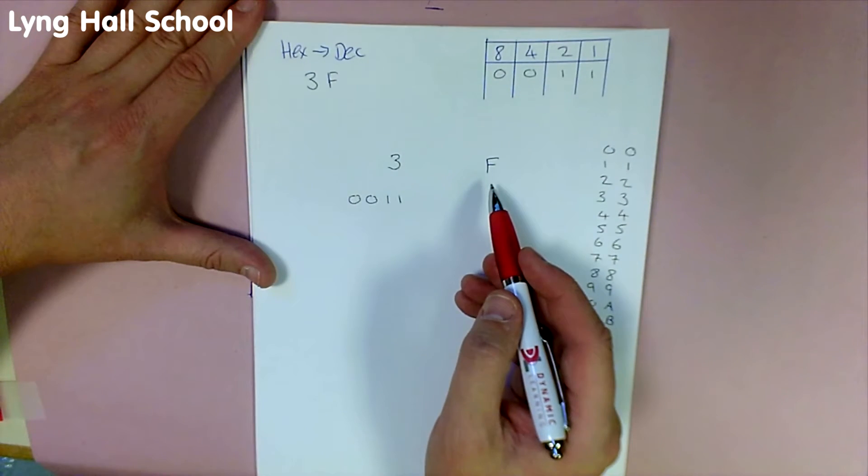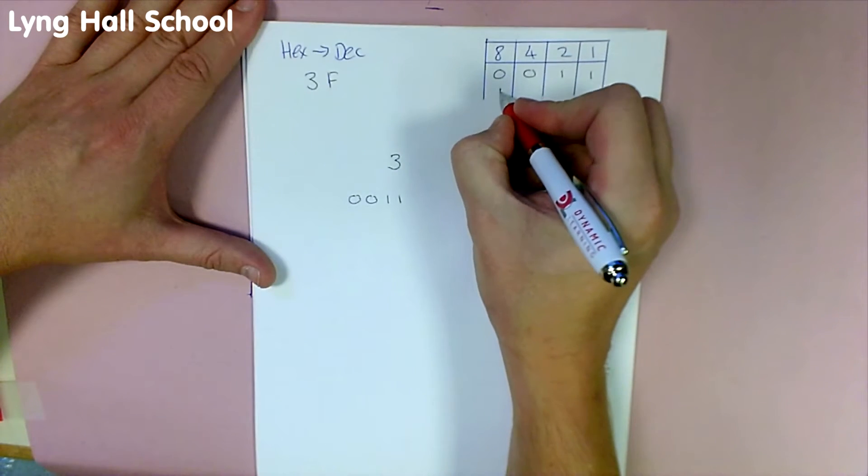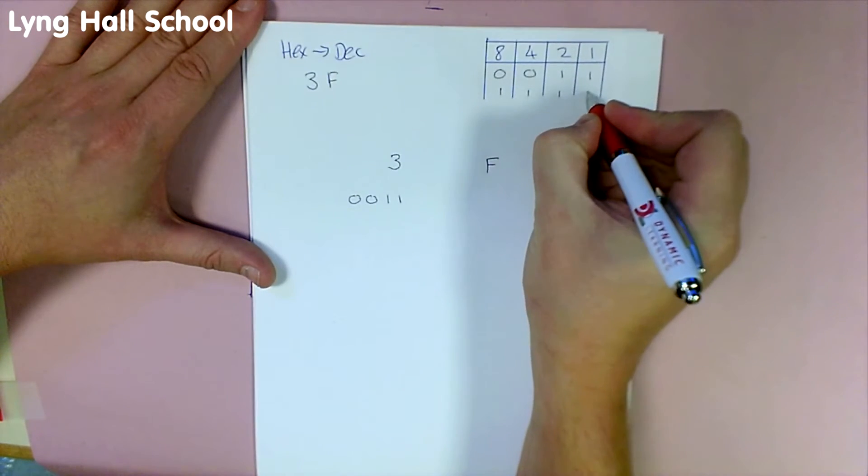So this is 15. This, as a binary digit, is 1, 1, 1, 1.